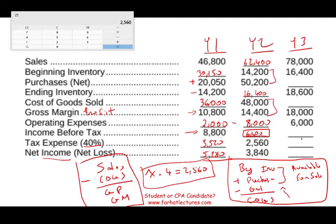In year three, I'm given sales, beginning inventory, and ending inventory, but not purchases or cost of goods sold — though I do have gross margin. Starting step by step: since I have sales and gross margin, I can find cost of goods sold. 78,000 minus 60 equals 18,000 — so cost of goods sold is 18,000. Now, with beginning inventory and the COGS formula, I solve for purchases X: beginning inventory plus X minus ending inventory equals 18,000, giving purchases of 62,200.